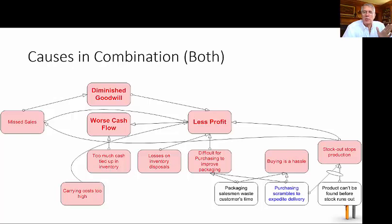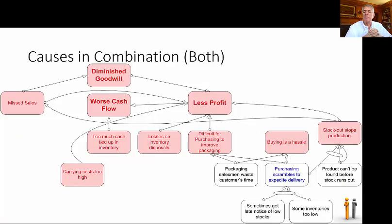Other times, multiple causes are necessary to create an effect. In other words, one is insufficient on its own to result in the effect. When purchasing is scrambling to find a raw material, it only causes a production stoppage when the product can't be found in time. So, the little banana shaped connector is an AND connector. And even if purchasing doesn't scramble at all, when the raw material can't be found, it still leads to a production stoppage. Here's another pair that have to both exist to cause purchasing to scramble.